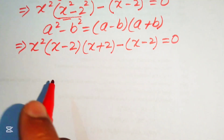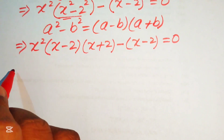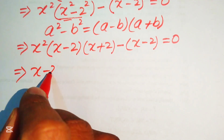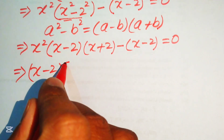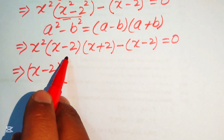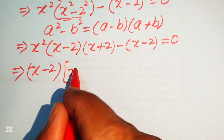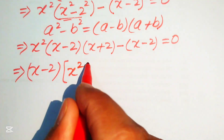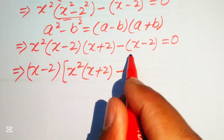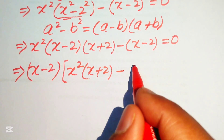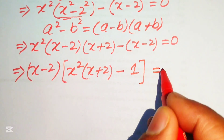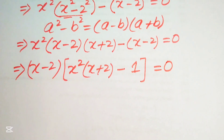We see that (x - 2) is a common term, so we factor it out. Taking (x - 2) common, we get (x - 2)[x²(x + 2) - 1] = 0.